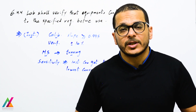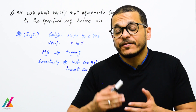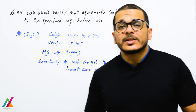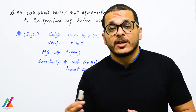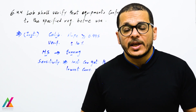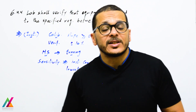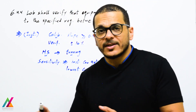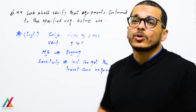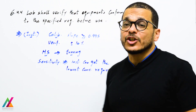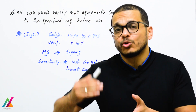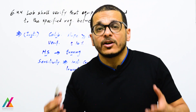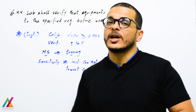The lab shall verify that equipment conforms to specified requirements before use, to ensure valid results. For instruments, after setup you shall perform calibration, verification, and sensitivity checks. For instruments such as GC-MS or LC-MS, tuning the mass spectrometer is also required. Calibration shall achieve a slope ≥ 0.995 to be accepted. A verification standard — ideally from a different supplier than the calibration standard — shall also be run.